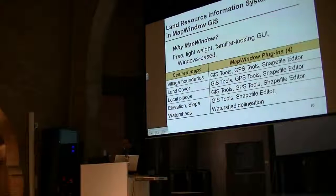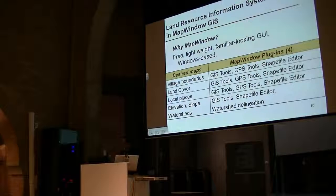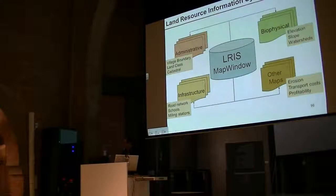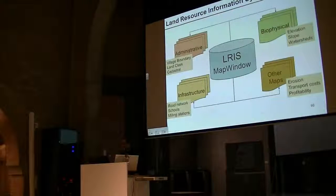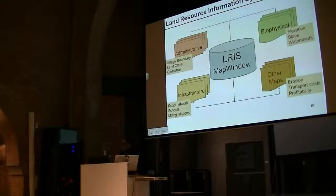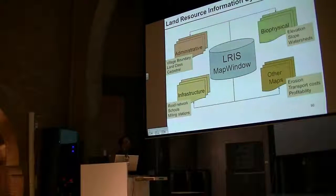We used four plugins: GIS tools, GPS tools, shape file editor, and watershed delineation. GIS tools work basically on vector and raster data; GPS tools for displaying and managing GPS information; shape file editor for editing the geometry of shape files; and watershed delineation for outlining the watersheds using a DEM. Just to note, we were using version 4.7 at this time. This is the basic framework of the land resource information system in MapWindow — it's basically a viewer for the community, for the maps done together with them: administrative maps, biophysical maps, infrastructure, and other maps from our own research.